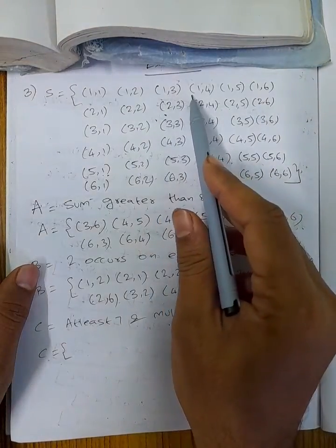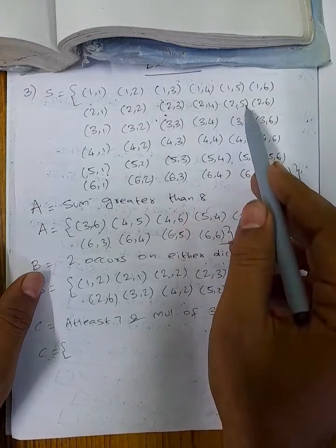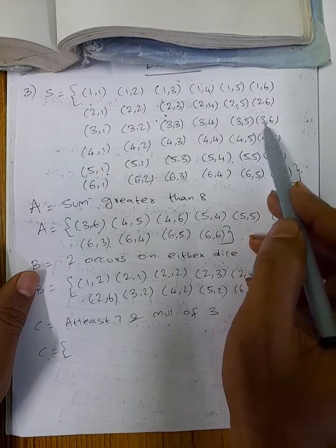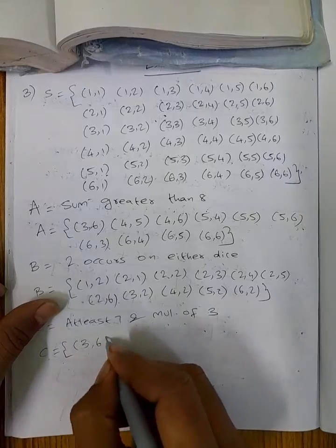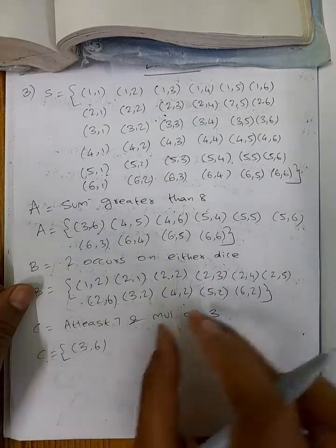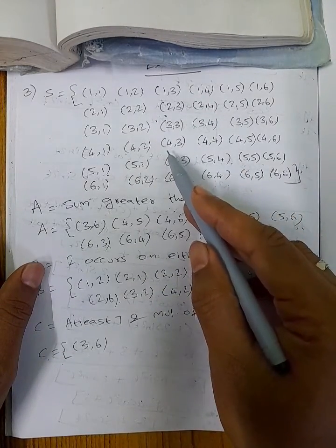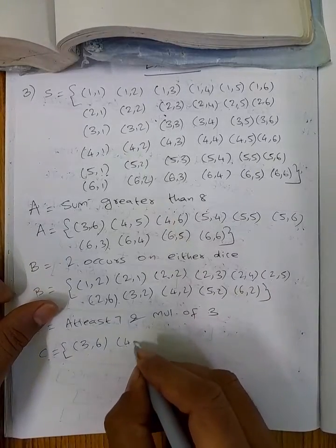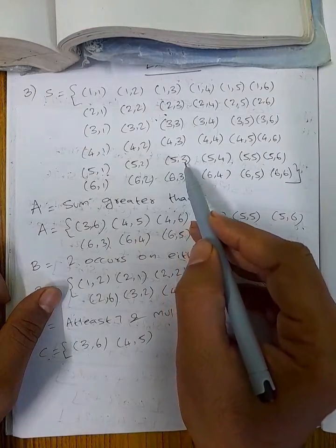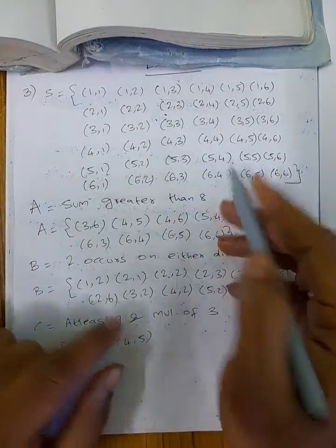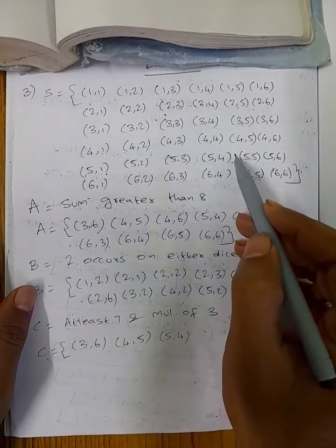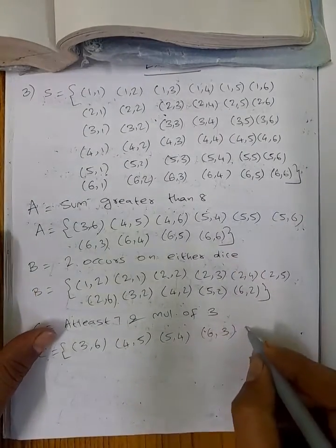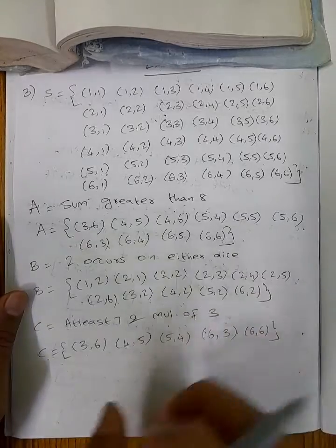Event C is sum at least 7 and a multiple of 3. So the sum must be 9 or 12 (multiples of 3 that are ≥ 7). Pairs include: (3,6), (4,5), (4,4) — wait, 4+4=8 not multiple of 3. Valid pairs: (3,6), (6,3), (4,5), (5,4), (6,2) giving sum 9, and (6,6) giving sum 12.